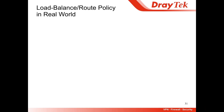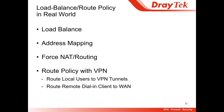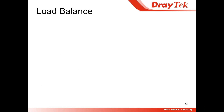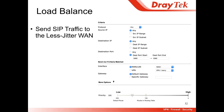How do people use load-balance route policy in the real world? First, they do basic load balance. They can also do address mapping, force native force routing, and route policy with VPN tunnel. For basic load balance: imagine you have two WANs — WAN1 and WAN2. Maybe WAN1 has less jitter, so you want to send SIP traffic to WAN1. You can set destination port 5060 to send through WAN1.